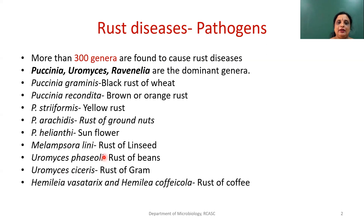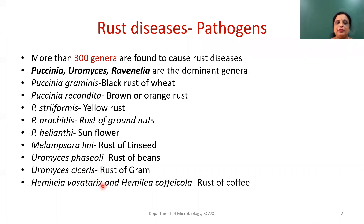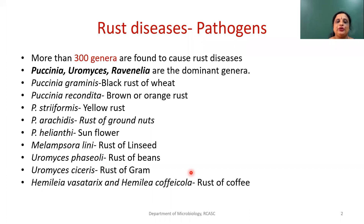One more rust to note is white rust. The genus that causes white rust is Albugo. Albugo species cause white rust in case of Cruciferae. This is not under Basidiomycotina. You can expect this question in most examination papers. This covers the different species of Puccinia causing rust in wheat as well as other genera which cause rust diseases.